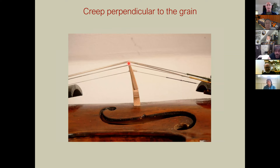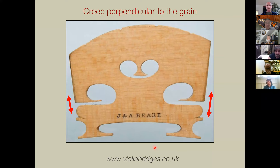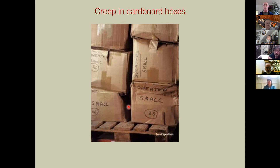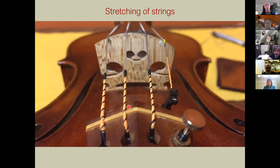With bridges over time, you can see a difference in width of the string slot — the E string has more downward force than the G, so it tends to deform the bridge that way over the years. Cardboard boxes also creep. Strings are the most familiar example: you tune up, bring up the tension, and they keep stretching until they eventually settle. Bows will also deform if they're not loosened between playing sessions.